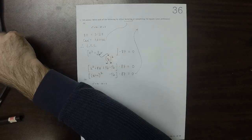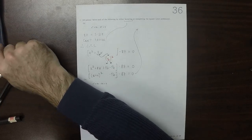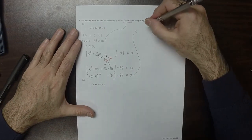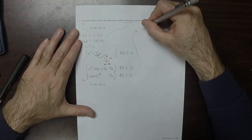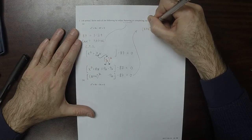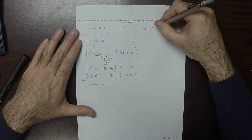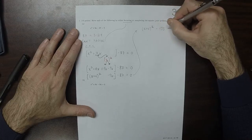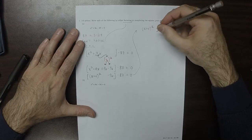So then, that would be x plus 4 squared, minus 103, is equal to 0.